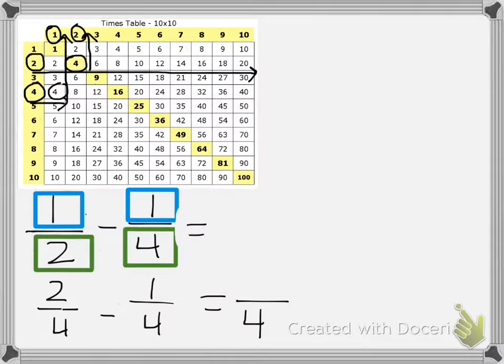I see that two minus one is equal to one. So that lets me know that one half minus one fourth is equal to one fourth.